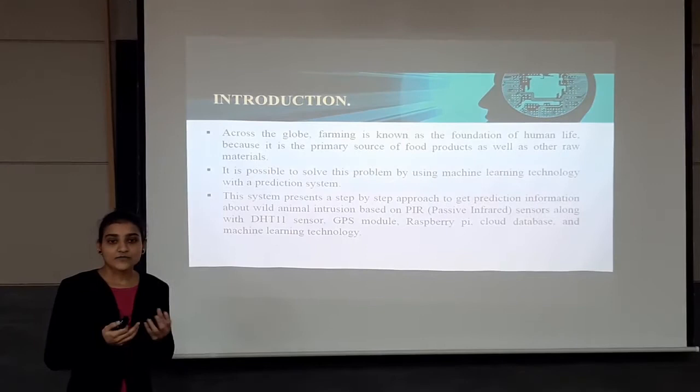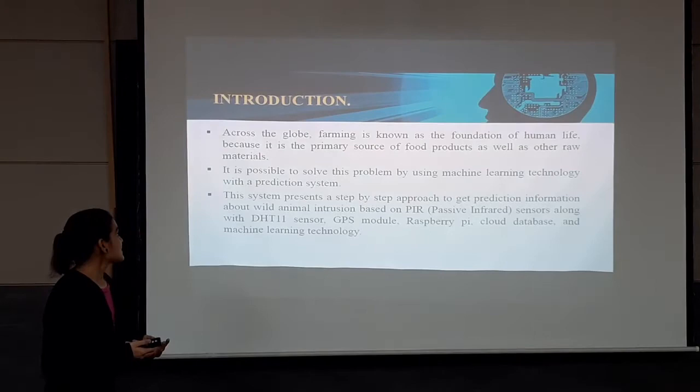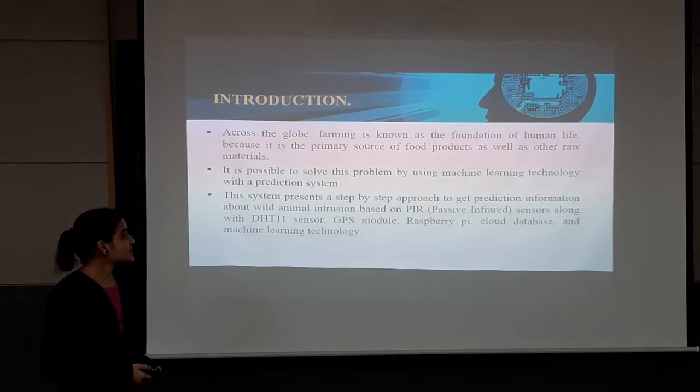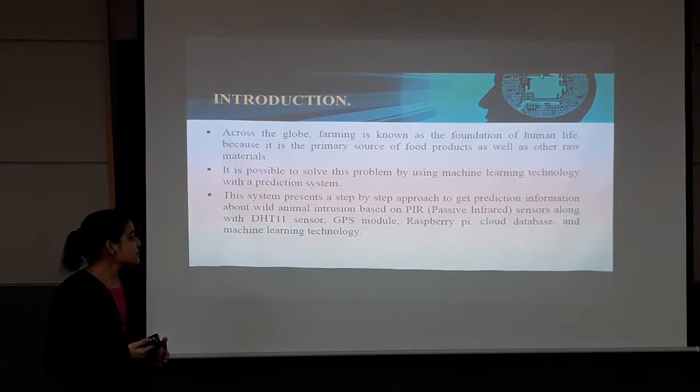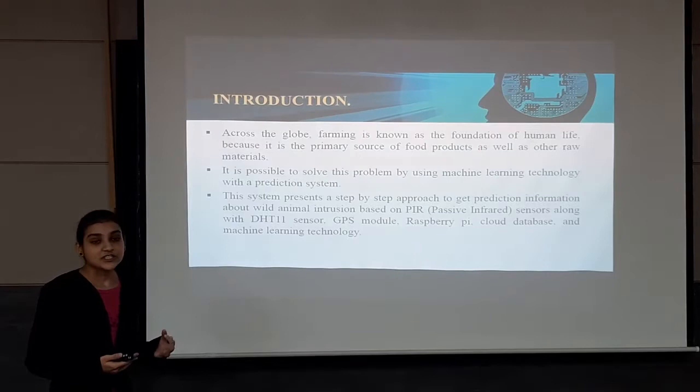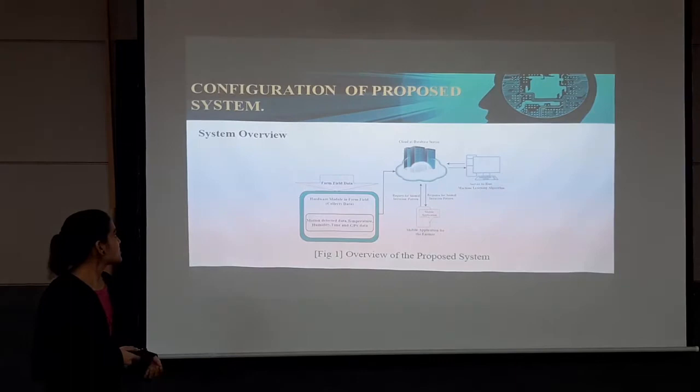This disruption is destroying the crops, creating losses for the money invested by farmers, and causing a lack of production in food. So I want to produce two solutions for that. It is possible to solve this problem using machine learning technology with a prediction system. This system presents a step-by-step approach to get prediction information about wild animal intrusion based on TIR sensors, along with the DHT11 sensor, GPS module, Raspberry Pi, cloud database and server, which includes machine learning technology.